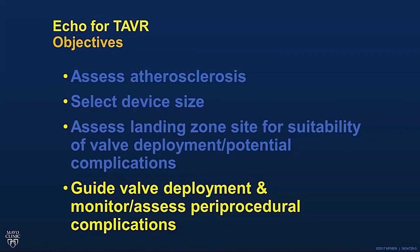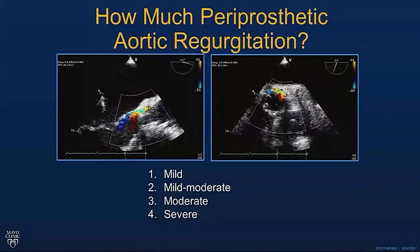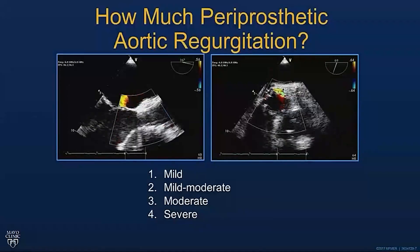We'll just go through examples. One of the complications that can occur — and it doesn't occur too much anymore with the newer prostheses, but it used to occur more often — is significant periprosthetic AR. It could be from a large aortic annulus, undersizing the prosthesis, asymmetric cusp calcification, LV outflow tract calcification, a septal bulge in the interventricular septum, or incorrect valve placement. We'll take an example and have a vote: how much periprosthetic AR do you think is there?